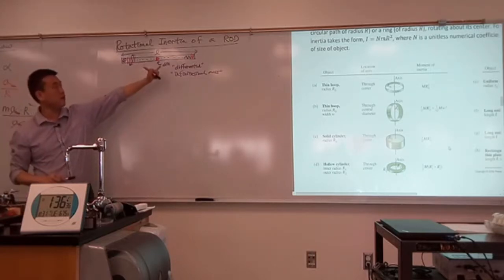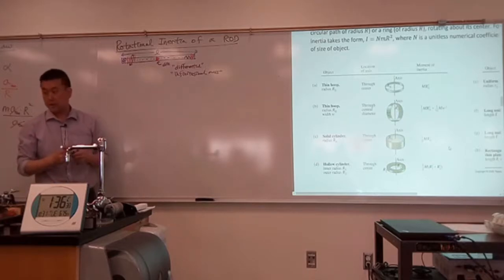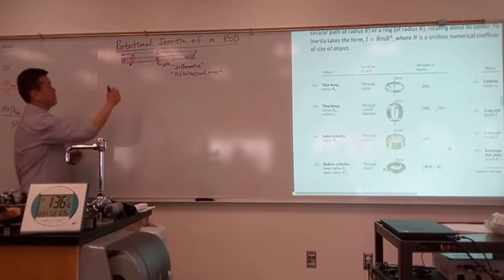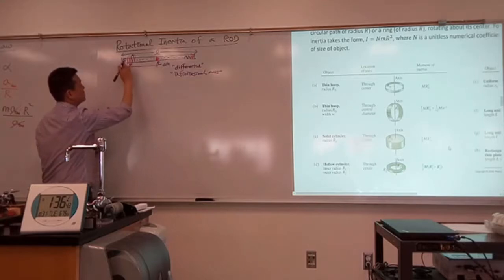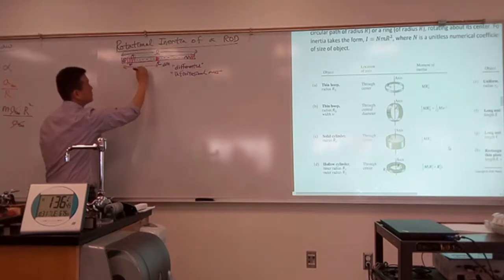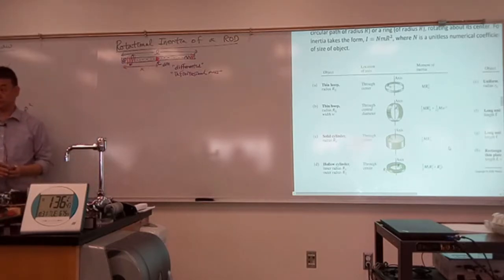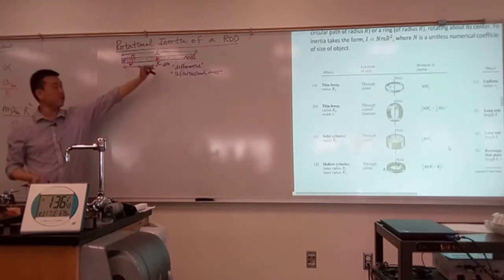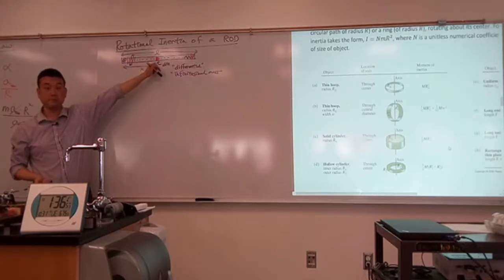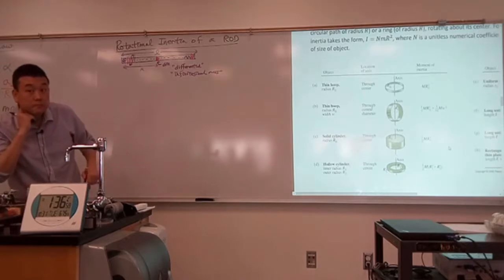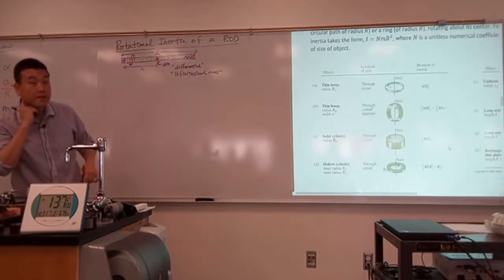This portion of the ruler has mass dm, and it is at a distance x from the center of rotation. Do you know what the rotational inertia of this tiny piece of ruler is? Do you have a formula for it? It's dm times x squared — dm·x².